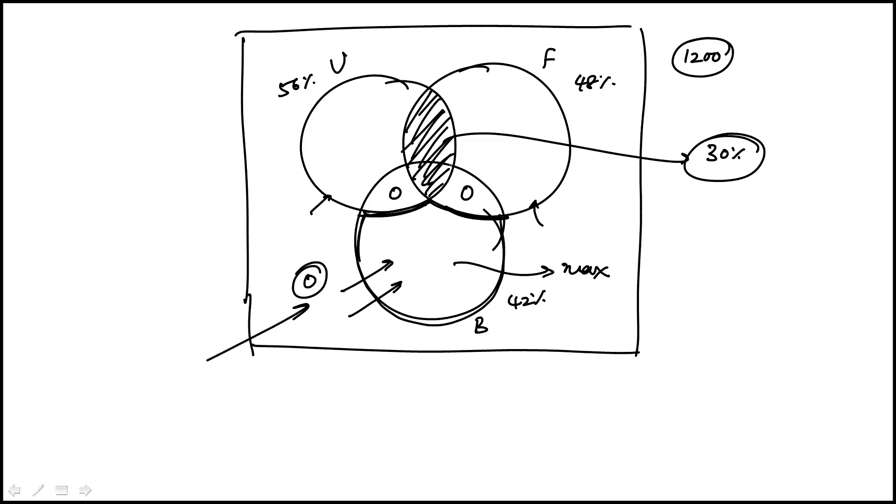And we know that this is 30%. So if we just look at these two circles, ignore this for the moment, then user-friendly alone would be 26%. And then fast response time would be 48 minus 30 or 18%. And to maximize this region, I've already made these conditions here 0, 0. So under these conditions, I just have to figure out how many are in those two circles.